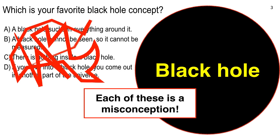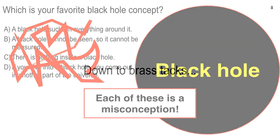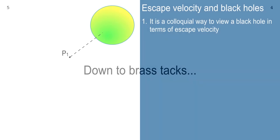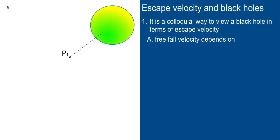Some black holes have spin — spinning black holes — it's a little bit fancier than what we're going to study today. You can make arguments about that, but it's still definitely not very practical. So let's get down to brass tacks. This is a good concept: escape velocity.